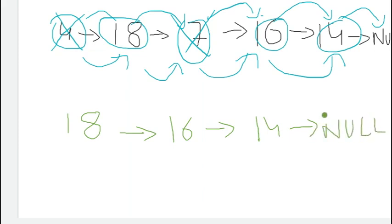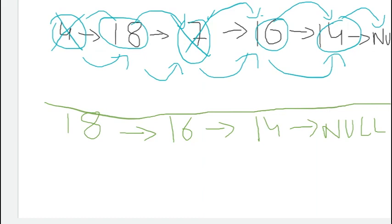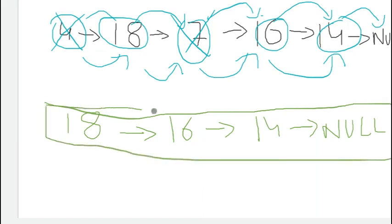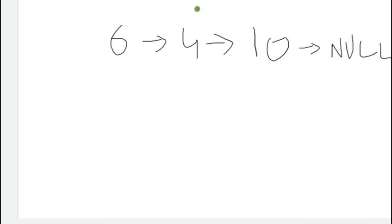One observation which will make implementation easier: after deleting all the values, you have a list which is in descending order. The list will definitely be in descending order. This is an observation we will use in our next part of code.